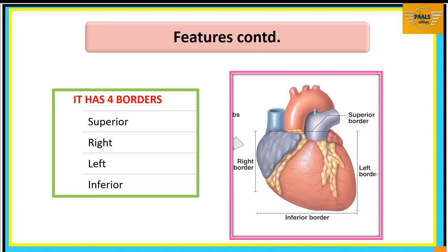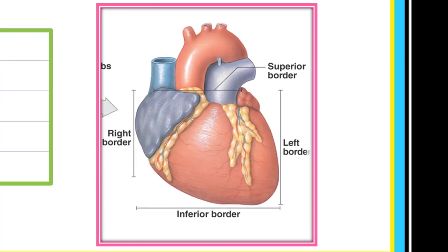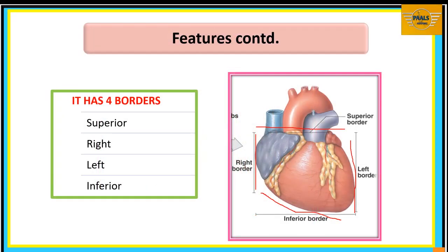We will now look at the borders. We will first identify these borders and then take time to look at specific features on them. We have four borders: the right border, the inferior border, the left border, and the superior border. These are the four borders of the heart: superior, inferior, right, and left.